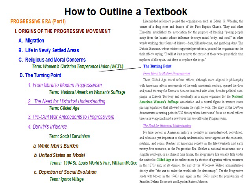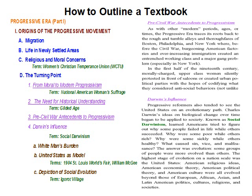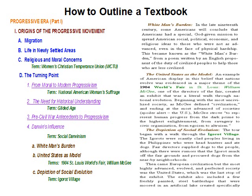Now let's focus on 'The Turning Point.' This subdivision is divided into four subsections. The first two in lilac on the right become: one, moral to modern progressivism, and two, the need for historical understanding. The author adds two more points of equal weight: three, the pre-Civil War antecedents to progressivism, and four, Darwin's influence. The subsection 'Darwin's Influence' has three parallel subdivisions of its own, each explaining a way Darwin's ideas affected progressive thinking: the white man's burden, the United States as the model, and the depiction of social evolution.